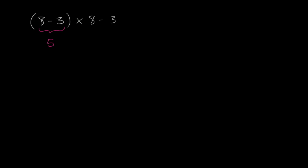So this simplifies to 5 times 8 minus 3. And now we want to do the multiplication before we do subtraction. This goes back to order of operations. You do your multiplication and division first. Well, you do your parentheses first. Then if you have multiplication, division, addition, and subtraction all in a row, you want to do your multiplication and your division first.